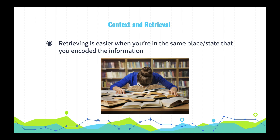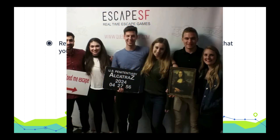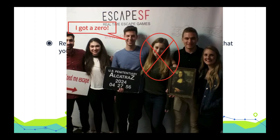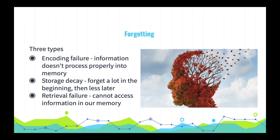Context also influences memory retrieval. If you memorize vocab words in a library study room, it'll be easier to remember them there than back at home. And if Frank gets sad because yet another girl rejects him, he'll be more likely to recall other sad memories in that gloomy state — like when he was the first person in the world to score a zero on the AP Psych exam.